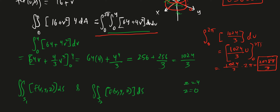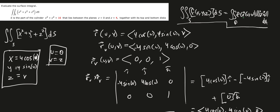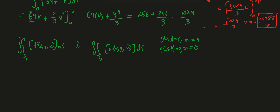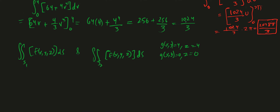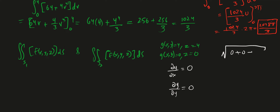We can define these as z equals 4 (for S1) and z equals 0 (for S2), i.e., g(x,y) = 4 and g(x,y) = 0. Since the partial derivatives of g with respect to x and y are both zero for both surfaces, the square root term equals 1, so dS = dA.